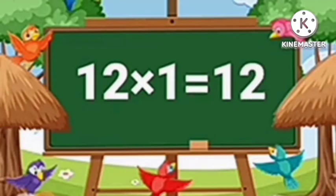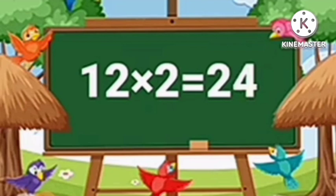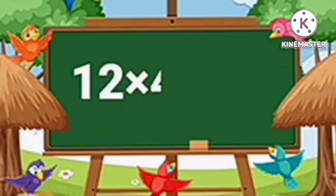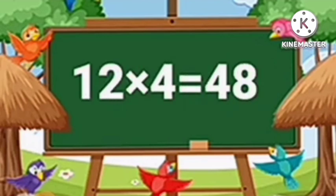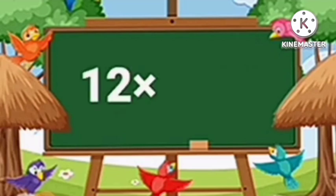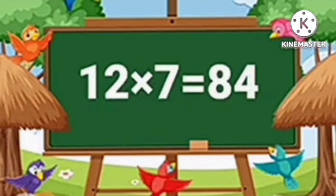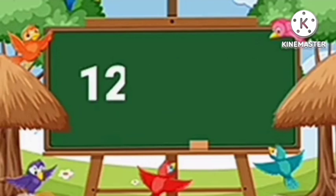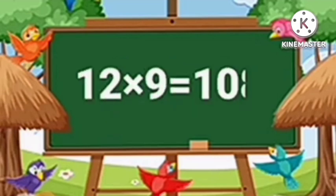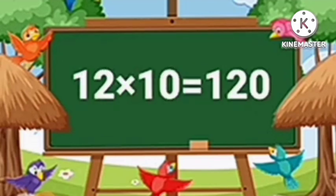Table of Twelve. Twelve ones are twelve. Twelve twos are twenty-four. Twelve threes are thirty-six. Twelve fours are forty-eight. Twelve fives are sixty. Twelve sixes are seventy-two. Twelve sevens are eighty-four. Twelve eights are ninety-six. Twelve nines are one hundred eight. Twelve tens are one hundred twenty.